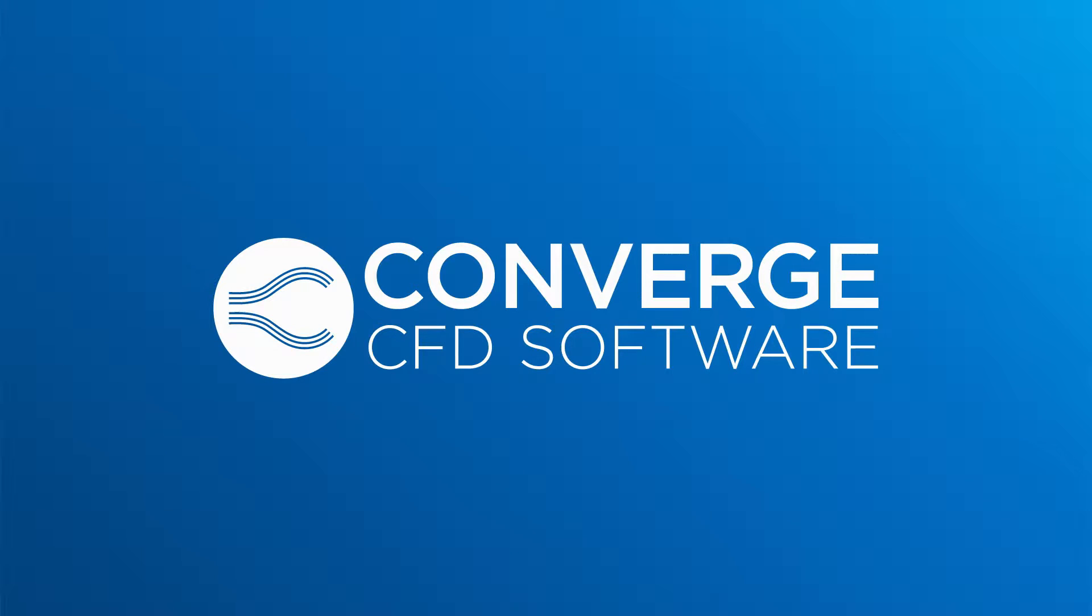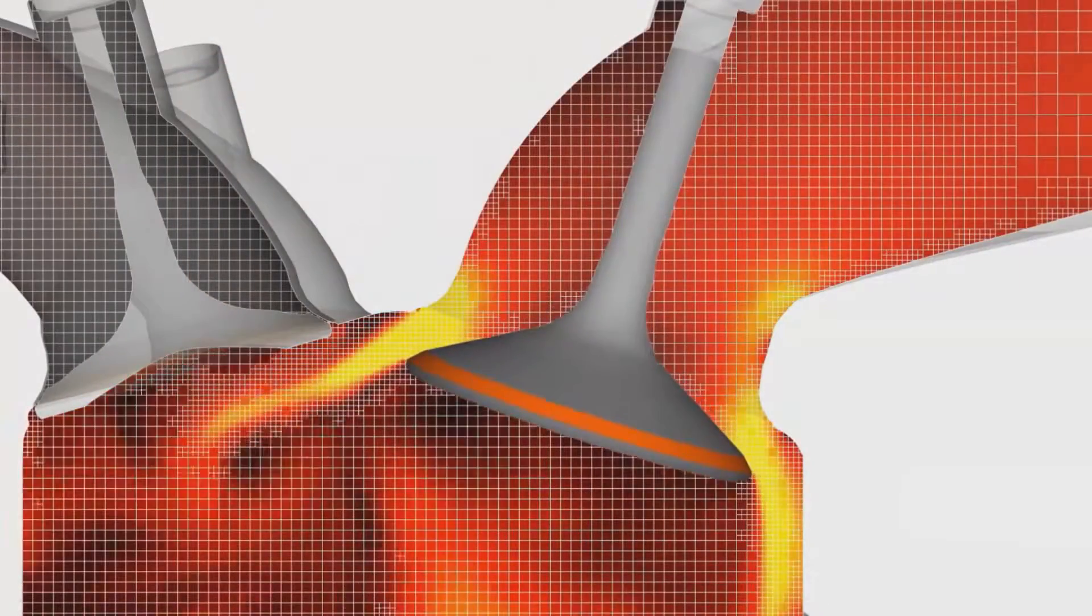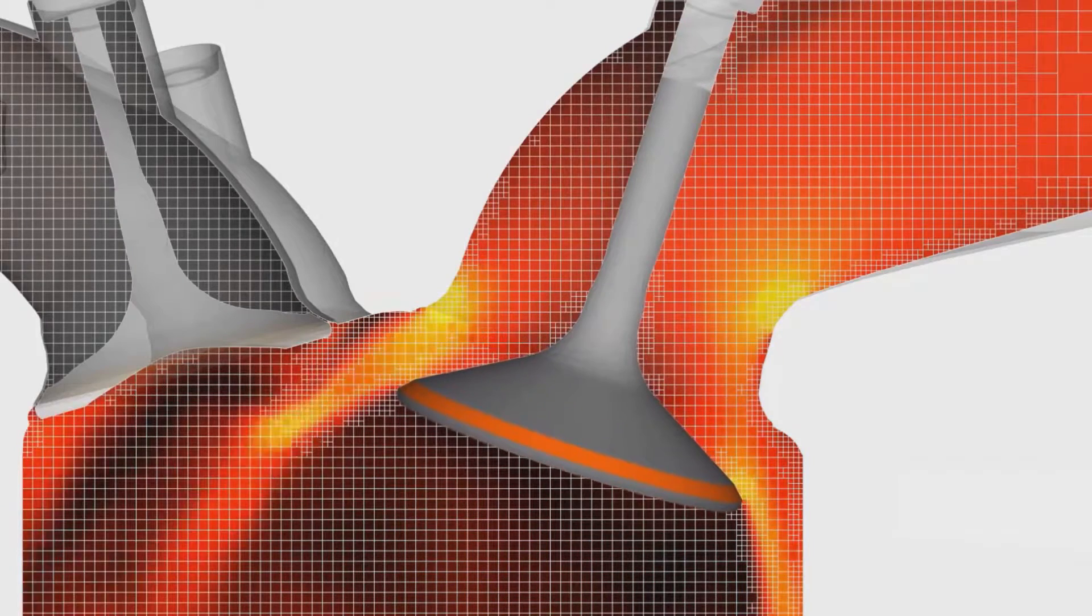Converge CFD automates and couples the meshing process at runtime, which really means that our CFD software is hardware limited. It's not software limited like the traditional approach.